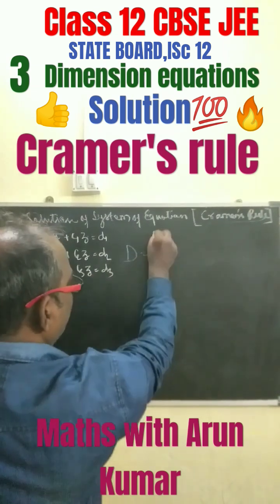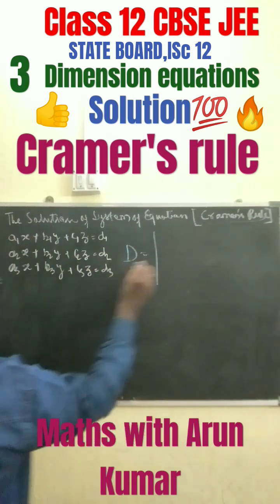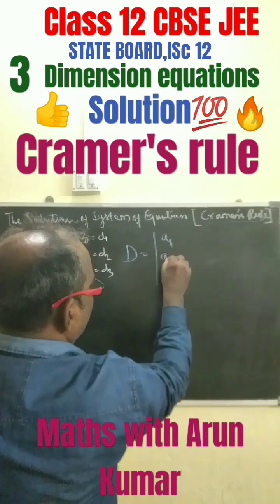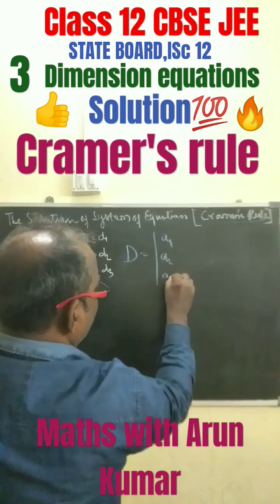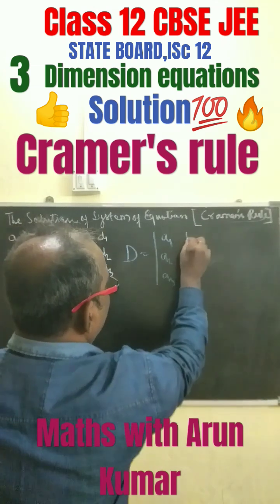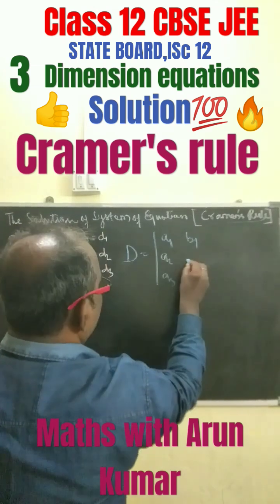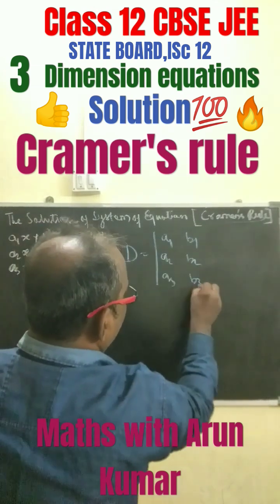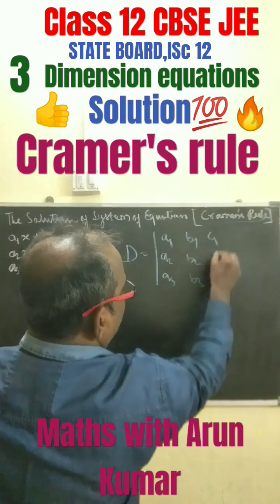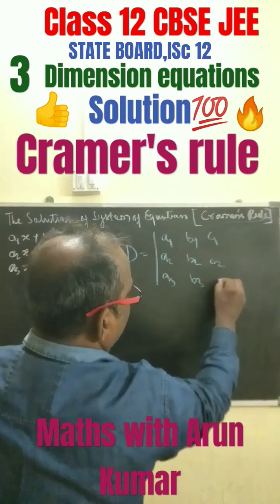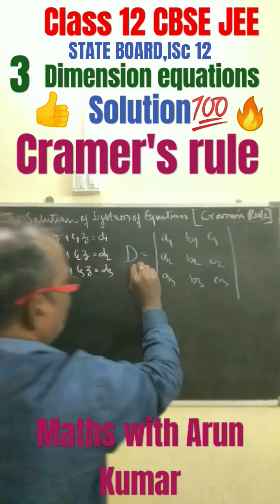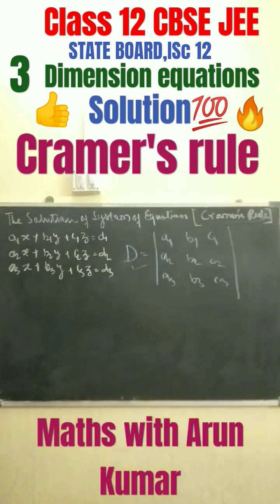The determinant D can be written as: a1, a2, a3 in the first row; b1, b2, b3 in the second row; and c1, c2, c3 in the third row. At first, you have to find out this determinant.